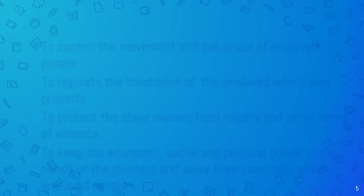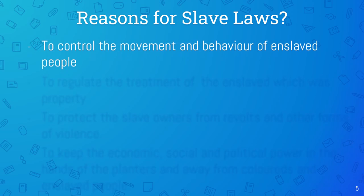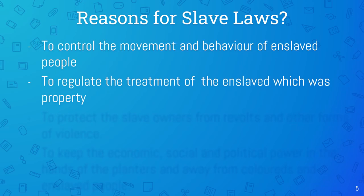Now let's look at why there were slave laws that came into place. The first reason was to control the movement and behavior of enslaved people. Remember, enslaved people were nothing but property to the slave owners — worth no more than a simple chair or a piece of land. They also wanted to regulate the treatment of the enslaved, who were considered property.